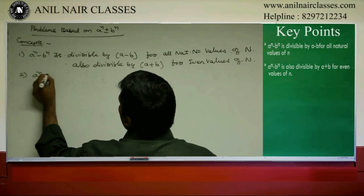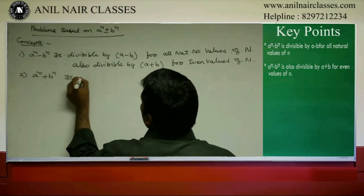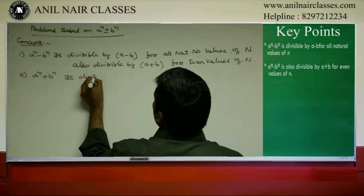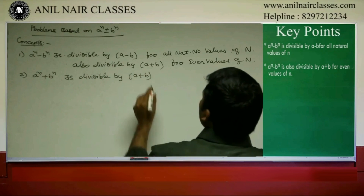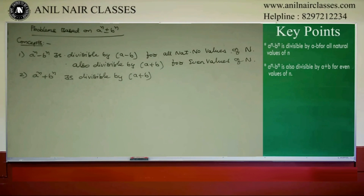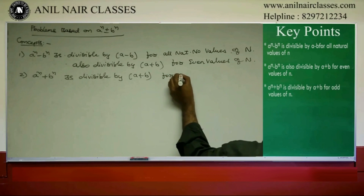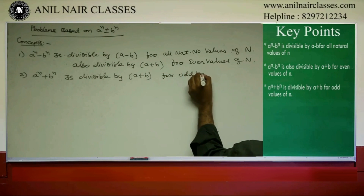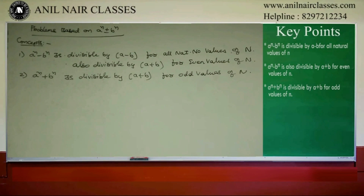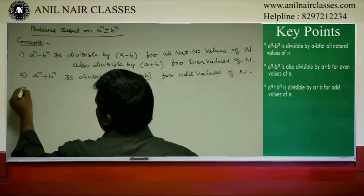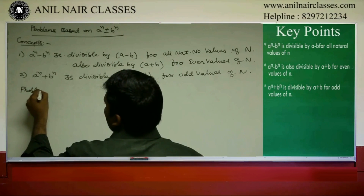A power n plus B power n is divisible by A plus B for odd values of n. This is the key rule we will apply to problems.